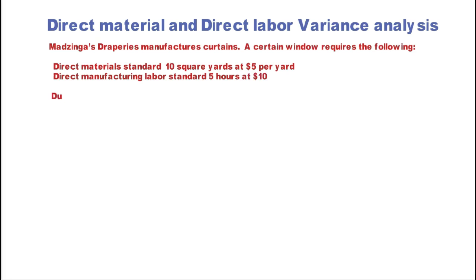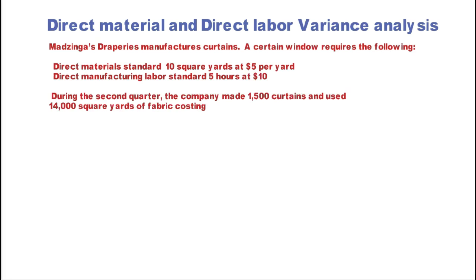Direct material standard: 10 square yards at $5 per yard. And the direct manufacturing labor standard is 5 hours at $10 per hour.